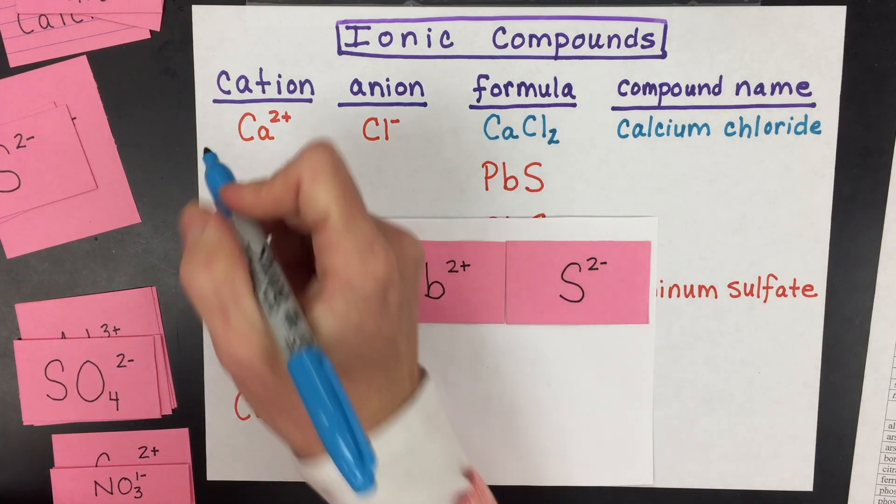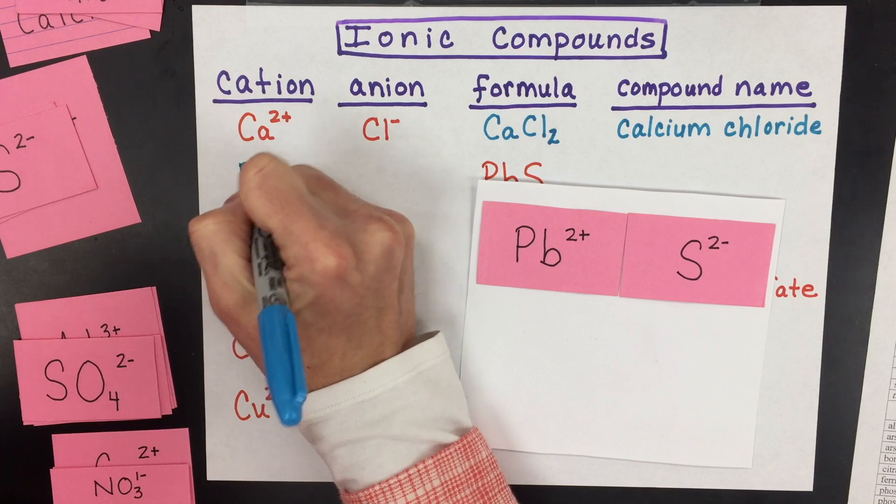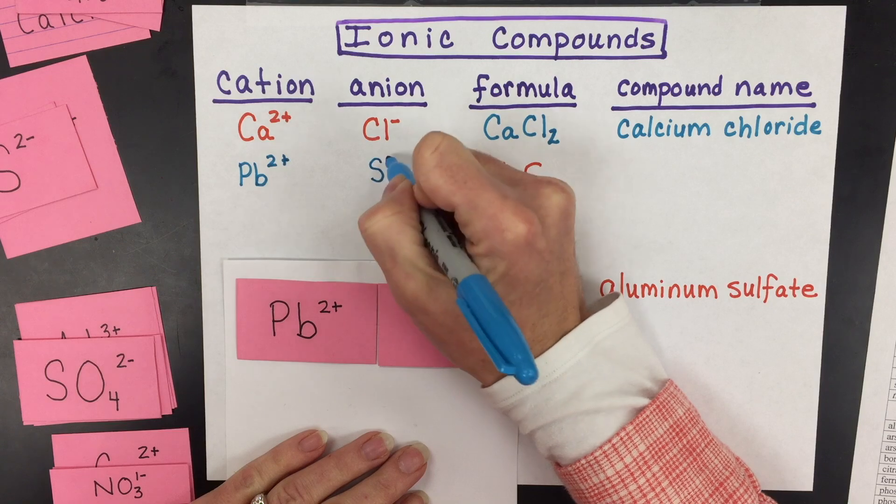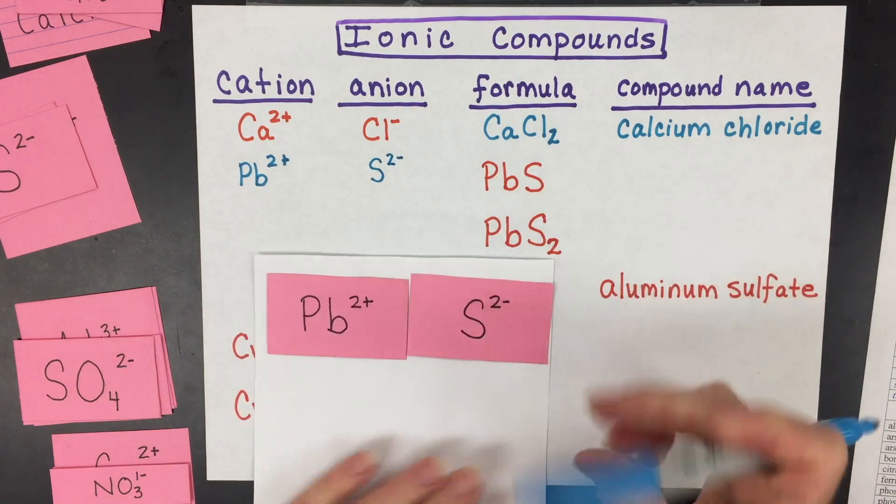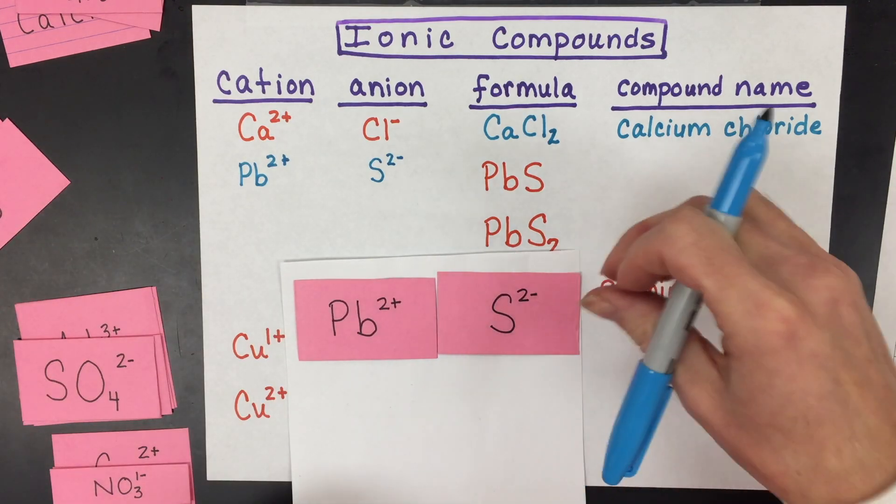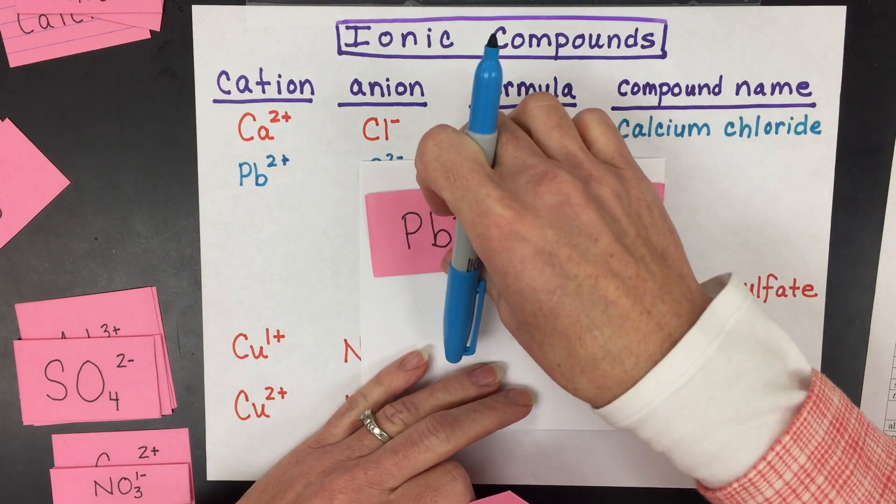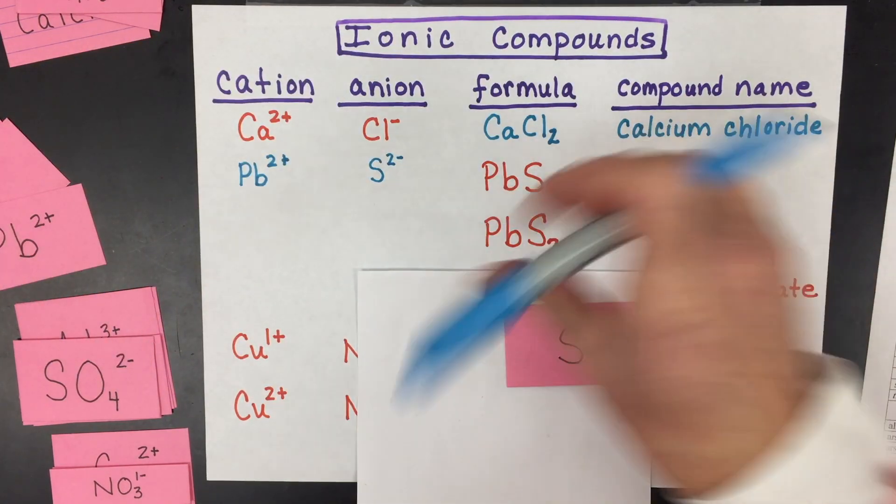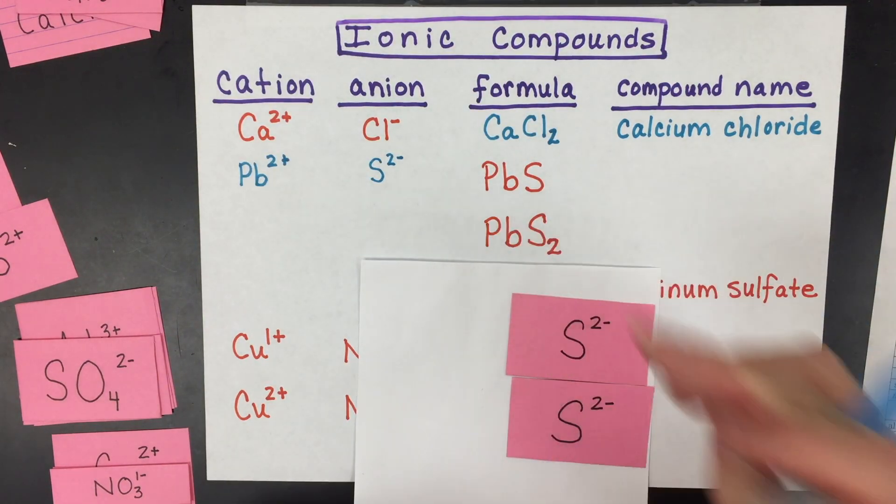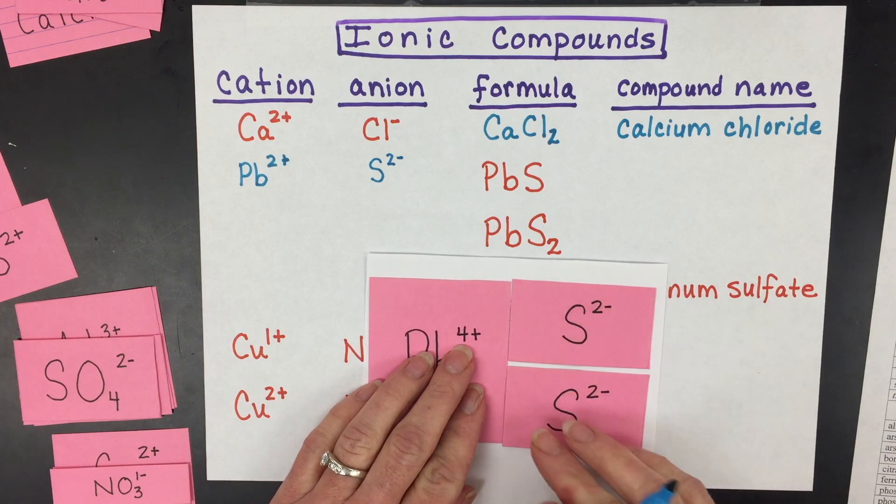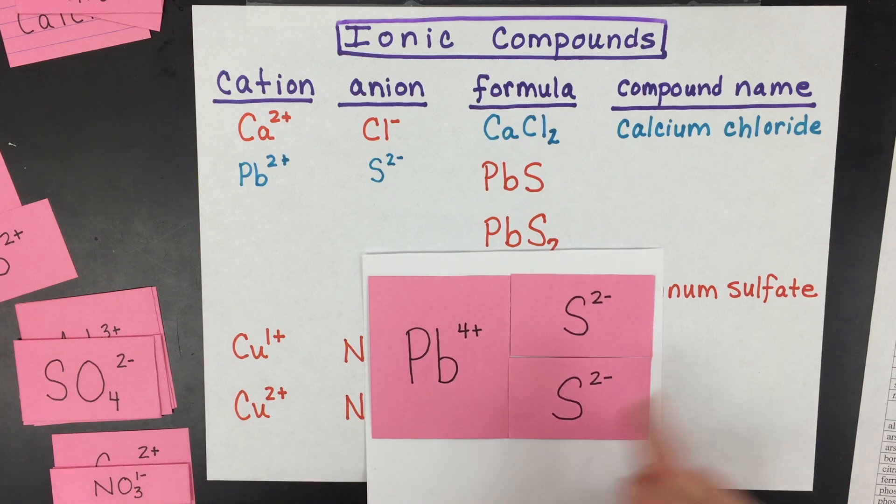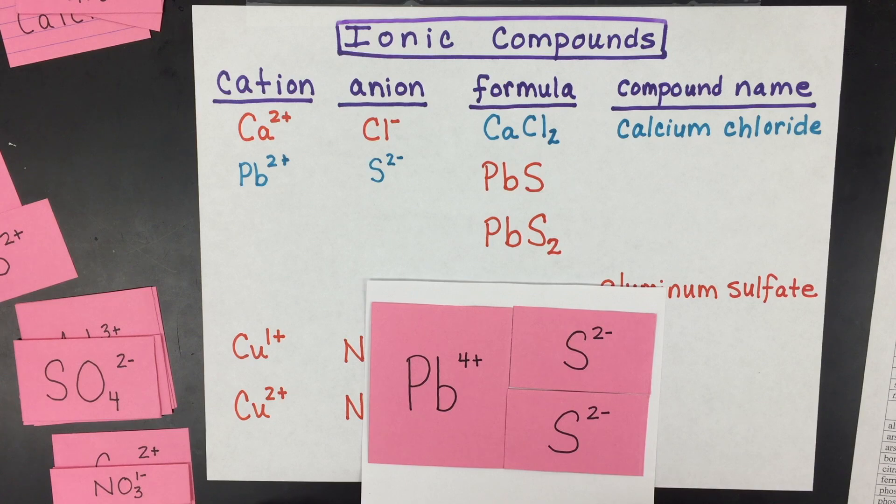And since sulfur as sulfide is always two minus, and there's only one lead, that must mean that the lead carries a two plus charge. So our cation is lead two plus, and our anion is sulfide, which is a two minus. This one is saying that there's two sulfides, so that must mean that that one lead that's there has twice as much charge as the other lead ion. So that means it's a lead four to match the four minus of those two sulfides together.